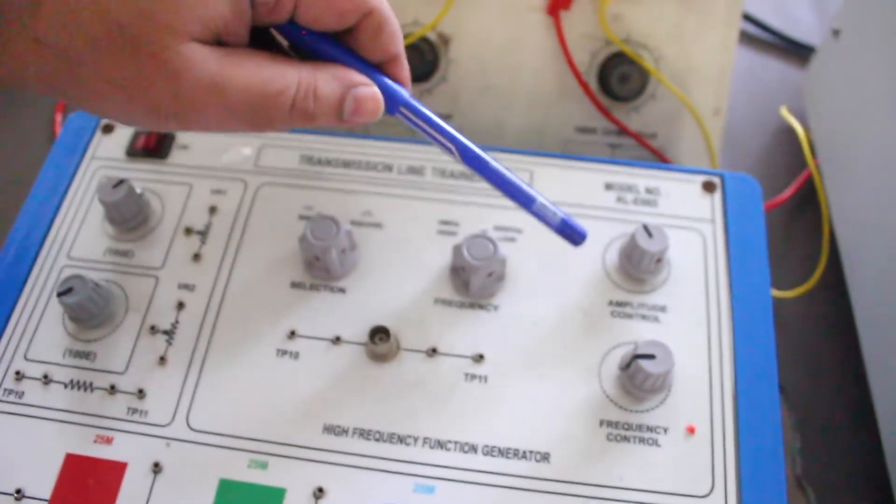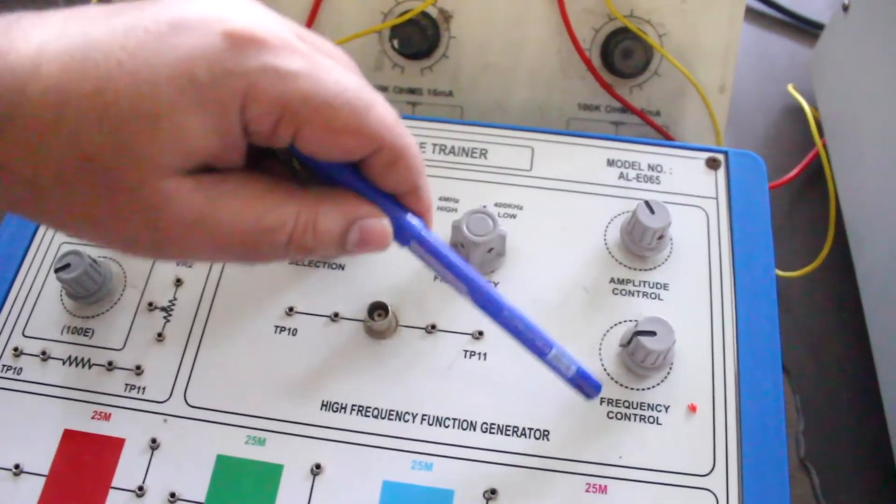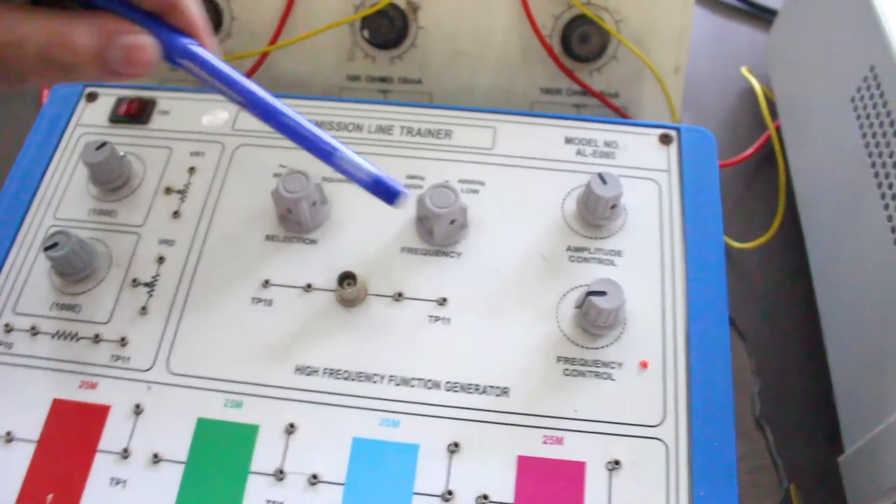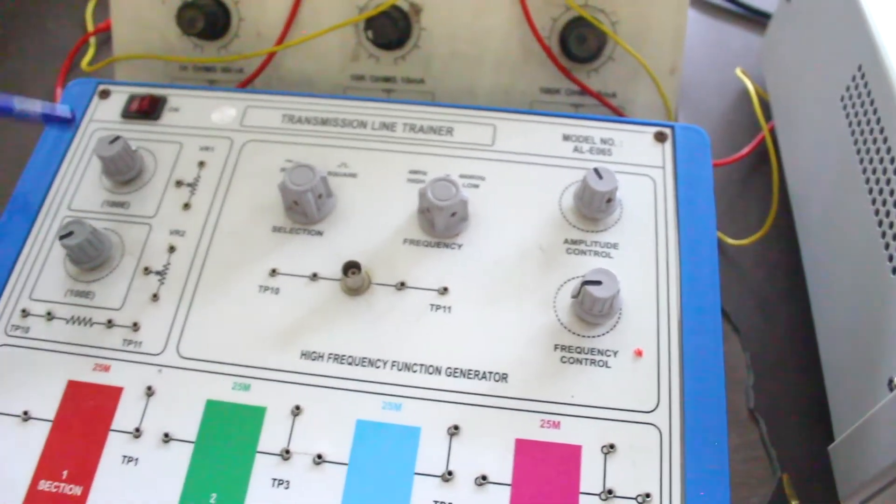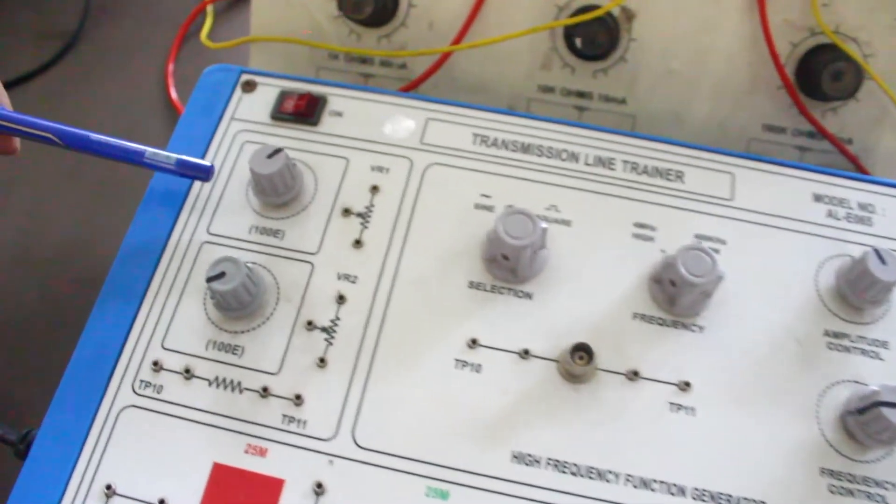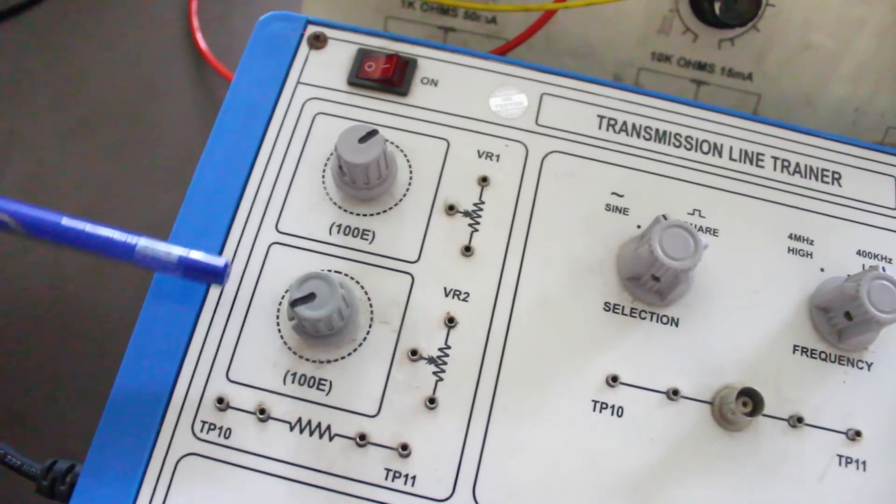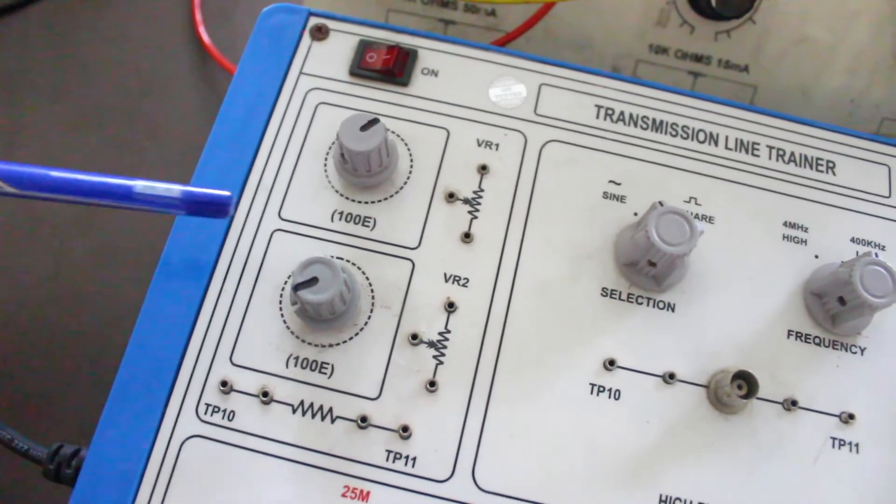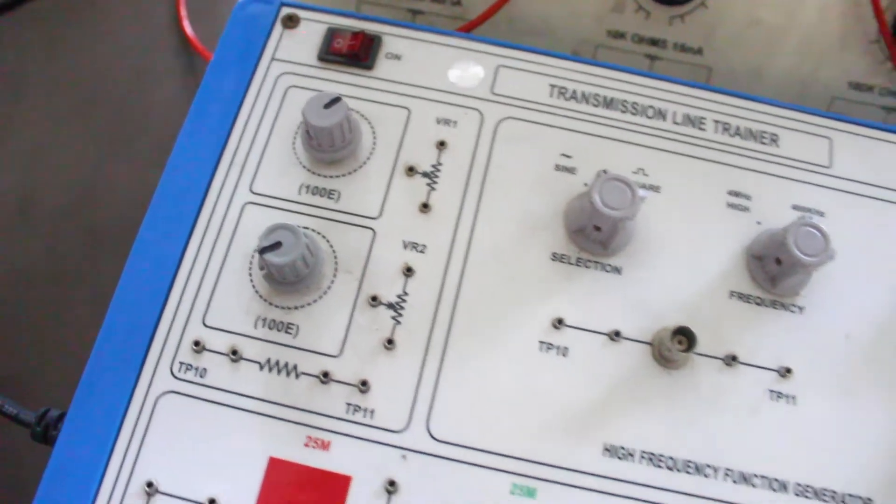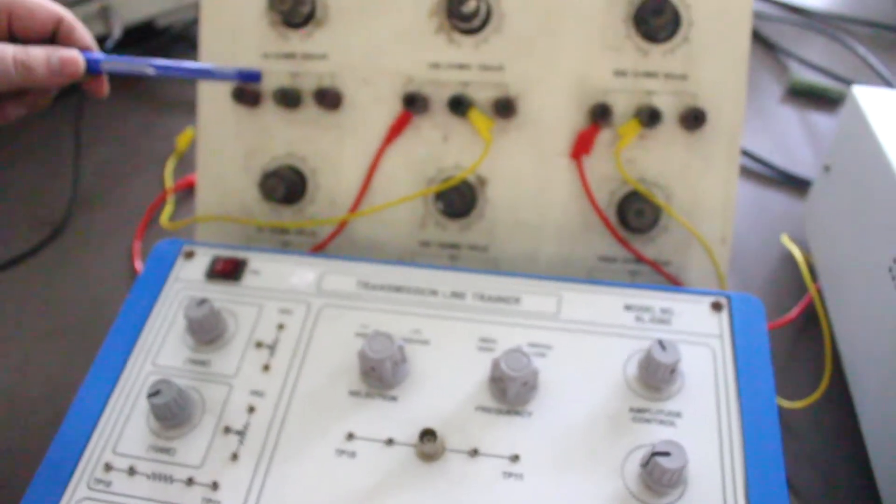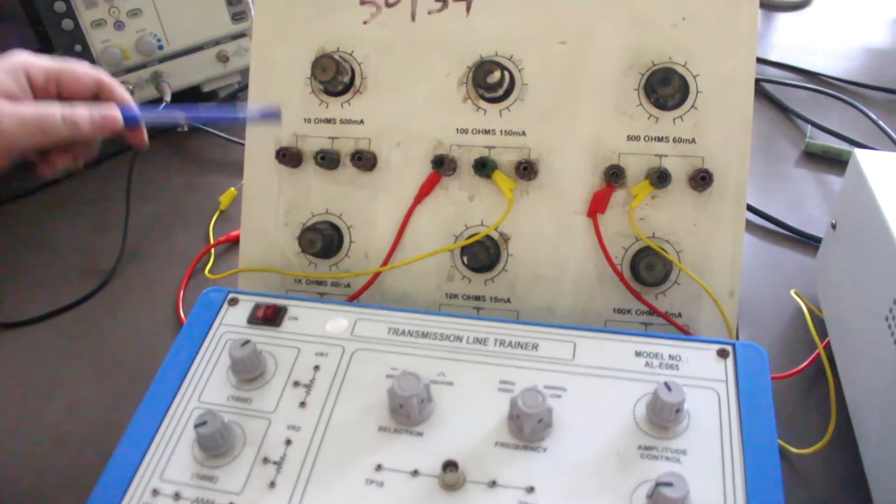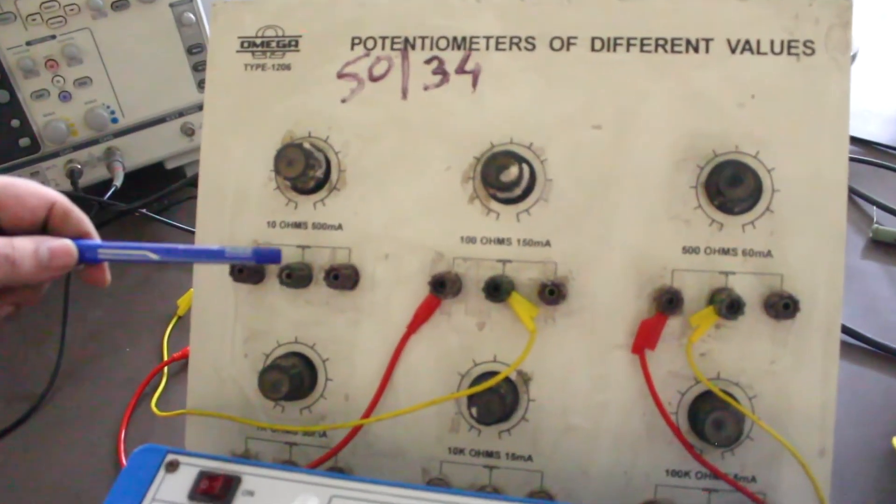These knobs are for varying the amplitude and the frequency of this function generator. Also we are having variable resistances which are used to balance the input and output circuits. We are also having some other potentiometers or other variable resistance values which we are going to use in this practical.